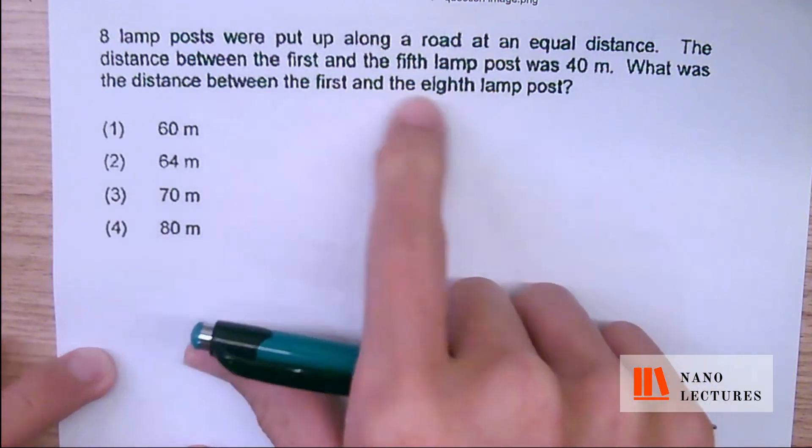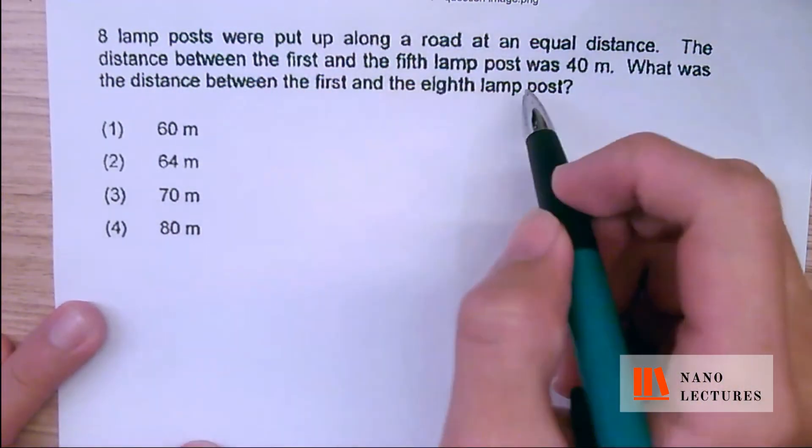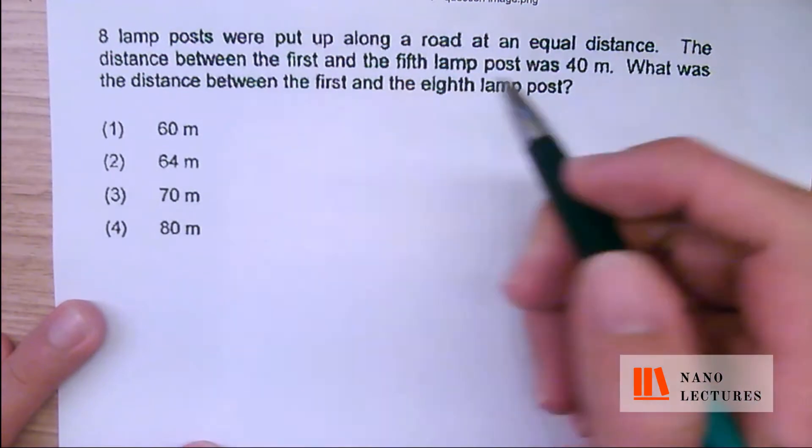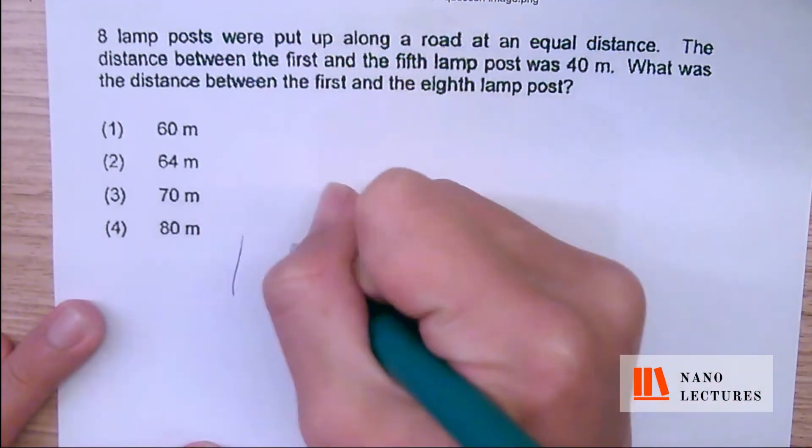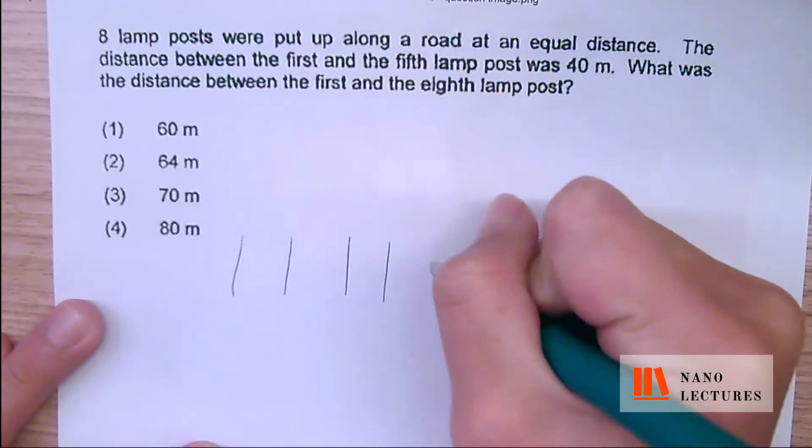Now to illustrate this question, they said that the distance between the 1st and the 5th lampposts was 40 meters. Lampposts 1, 2, 3, 4, and 5.